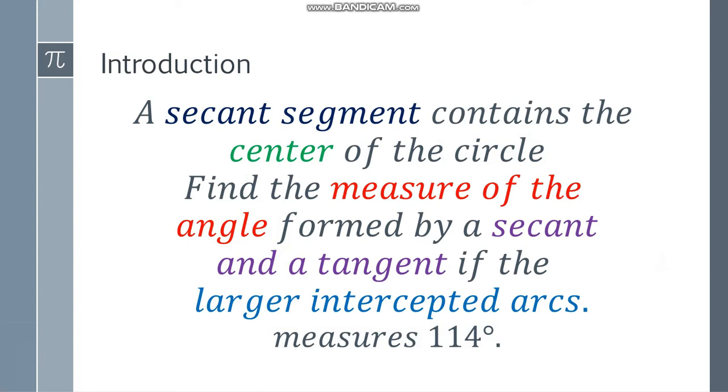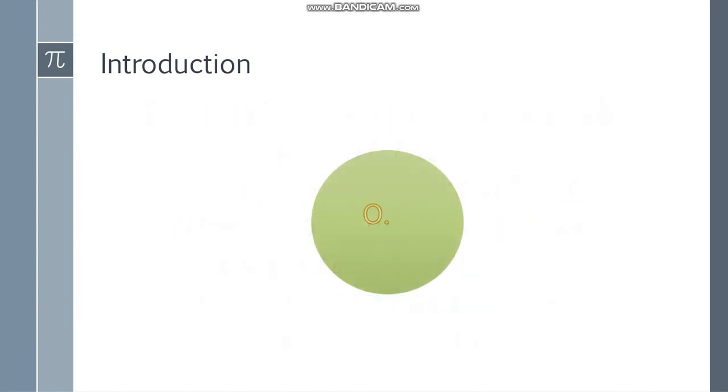So how are we going to solve this? The first thing you will do is draw a circle with the center and draw a secant passing through the center because it is stated in the problem. So that will be secant AB and the next one will be the tangent. So that will be this one and I'll label the part so that will be tangent DC.